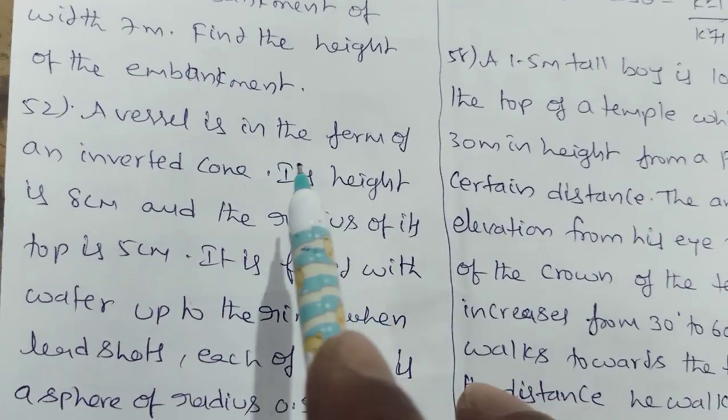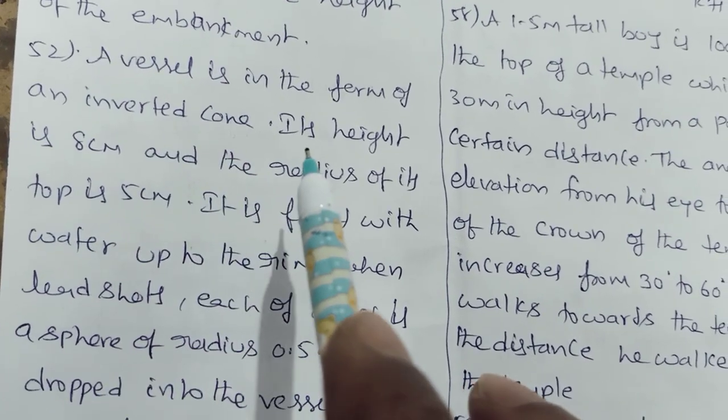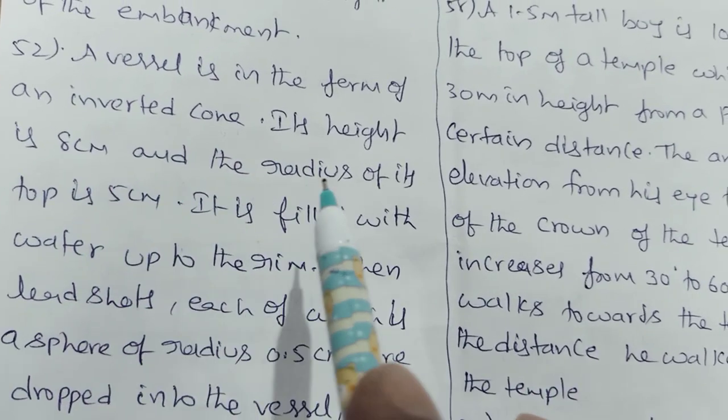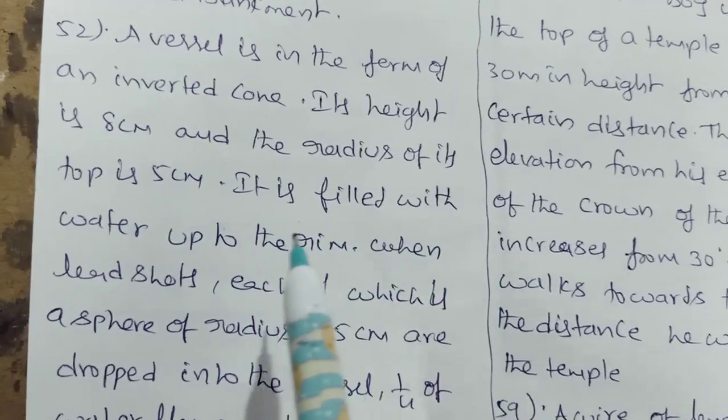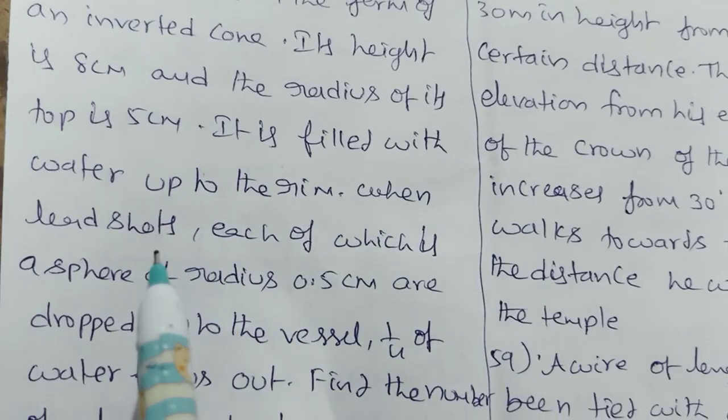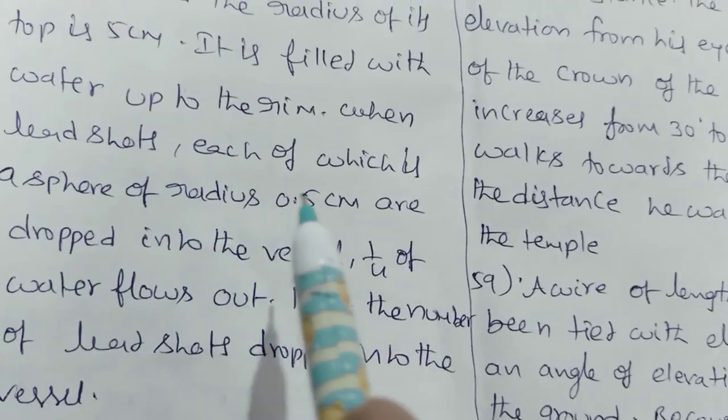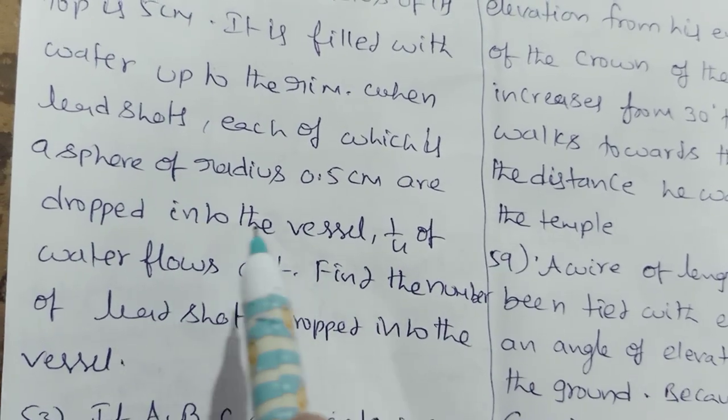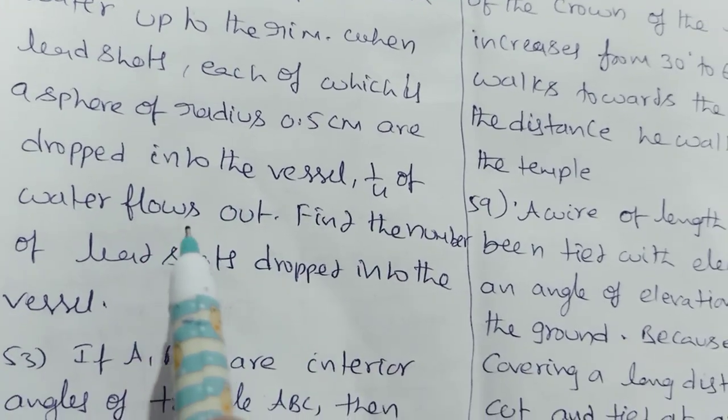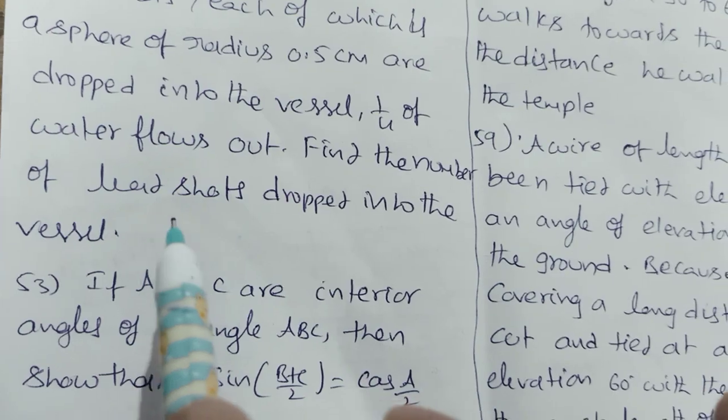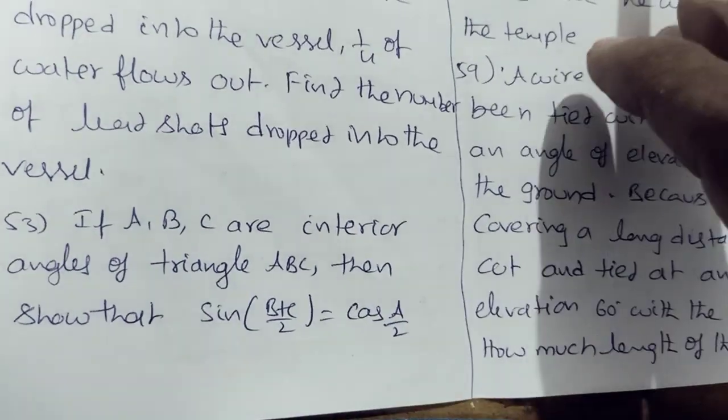How many spherical balls can be made out of a solid cube of lead whose edge measures 44 cm and each ball being 4 cm diameter? A well of diameter 14 cm is dug 15 m deep. The earth taken out of it has been spread evenly to form a circular embankment of width 7 m. Find the height of the embankment. A vessel is in the form of an inverted cone. Its height is 8 cm and radius of its top is 5 cm. It is filled with water up to the rim. When lead shots each of which is a sphere of radius 0.5 cm are dropped into the vessel, 1 by 4 of water flows out. Find the number of lead shots dropped into the vessel.